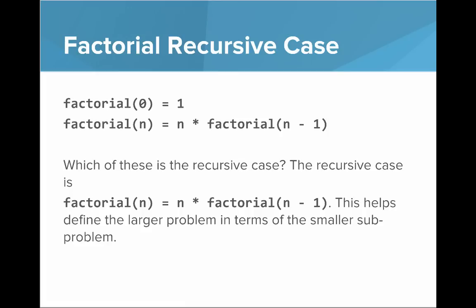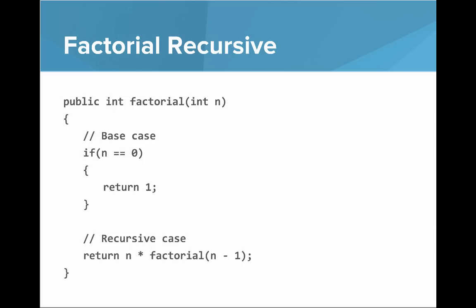So which of these is the recursive case? The recursive case is factorial of n equals n times factorial of n minus one. So this helps define the larger problem in terms of the smaller subproblem. So what does recursive factorial look like? Well this is what it looks like. We start with the base case. If n is equal to zero, then we return one. Otherwise we return n times factorial of n minus one. And that's it. It just works. It's a little bit confusing, but we'll talk a little bit more about how you can think about it.